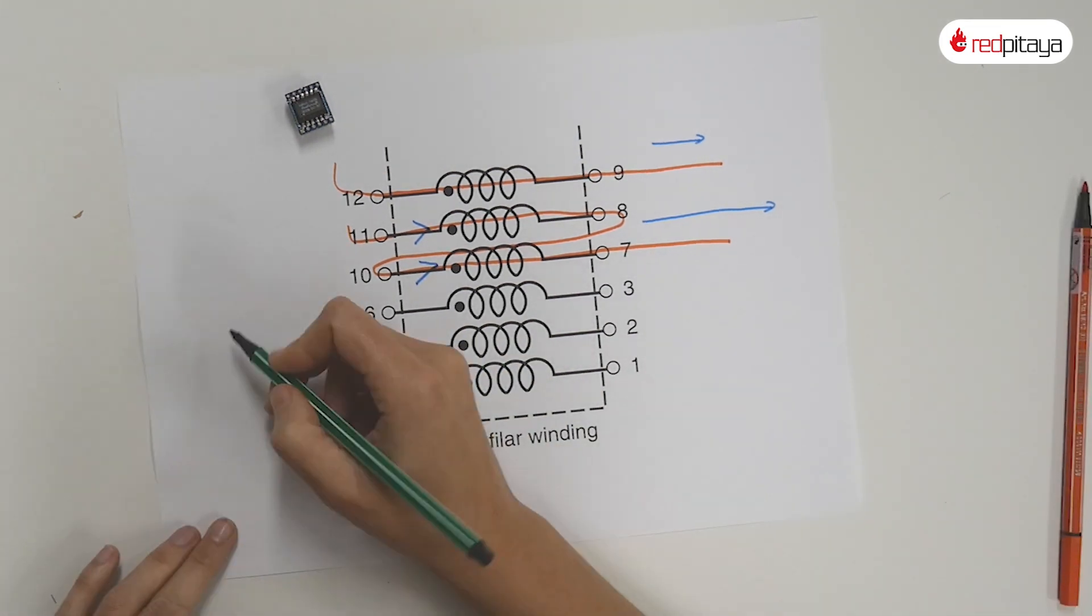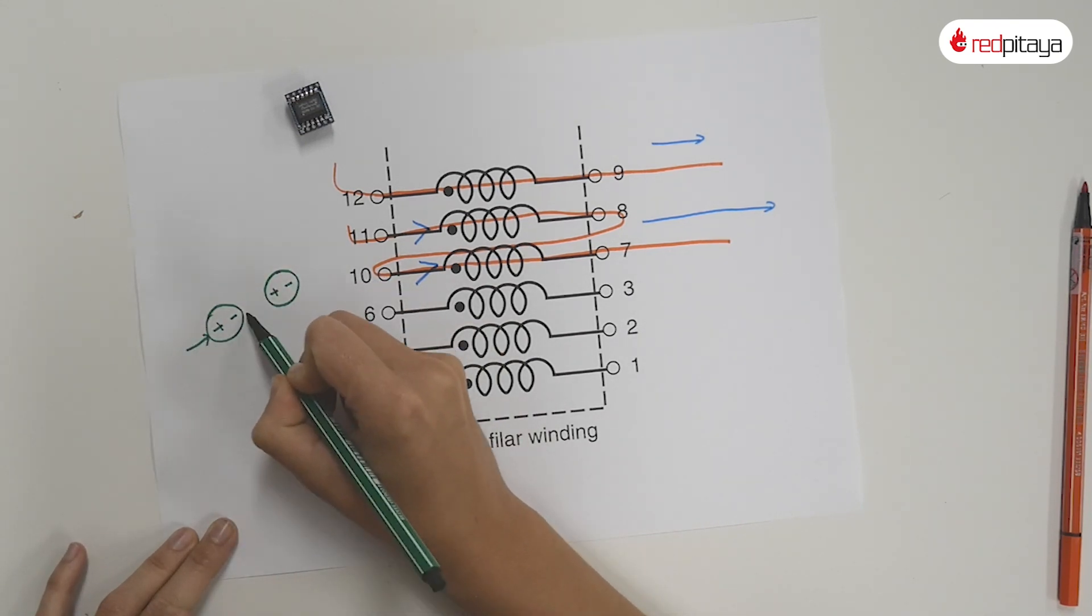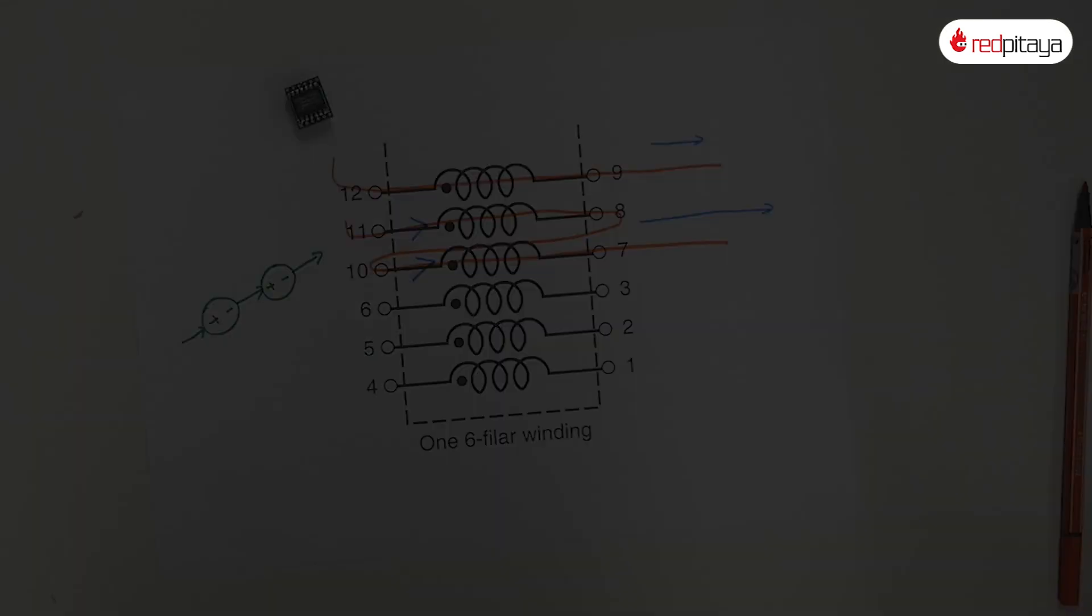Think of coil polarity as polarity in batteries. Real power supplies use transformers to drop the mains voltage from 230 volts to something more manageable. But what will we do? We'll use a transformer to increase Red Pitaya's output voltage. This way, the diode drop will have less effect on the system.